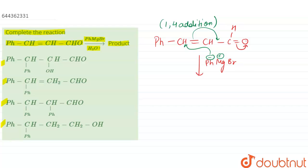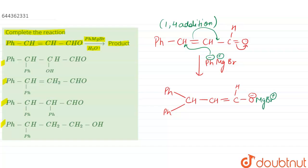That means Ph will also be attached to this carbon, giving Ph-C(Ph)(H)-CH=C-O⁻ and H. The MgBr⁺ will be attached to this O⁻, forming an O-MgBr intermediate.